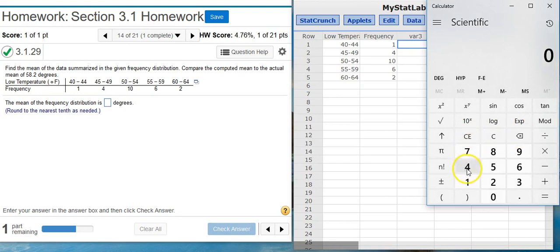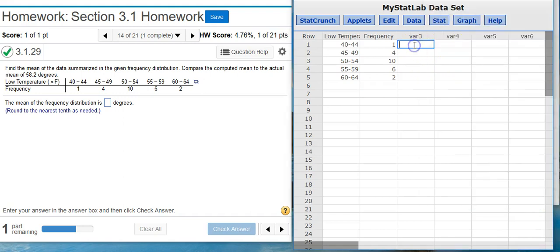There's my calculator. I'm just going to take the average of my upper and lower class limits for that first class there. So 44 plus 40, 84 divided by 2, 42. So my first midpoint is 42.